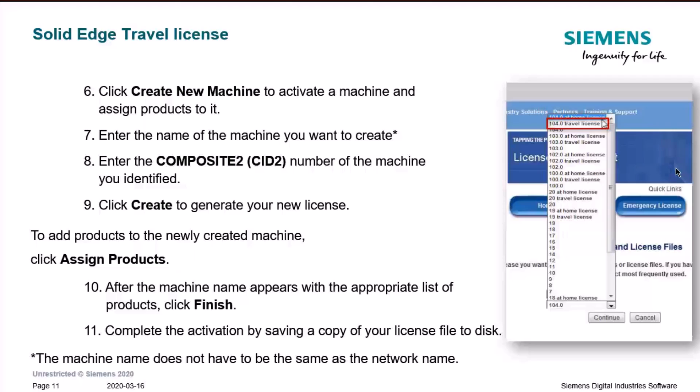Next, create a new machine to activate it and assign products to that machine. Enter the name of the machine — it doesn't have to match the network name. Enter the Composite 2 CID number of the machine and click Create to generate your new license. To add products, click Assign Products, and after the machine name appears with the appropriate list, click Finish. Finally, save the newly generated license to your hard drive — on the desktop or in a directory you can note.